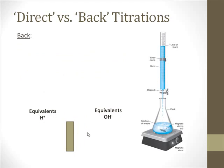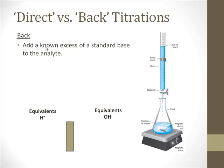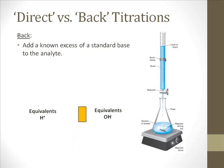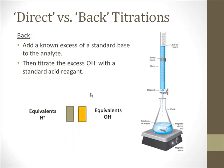In a back titration, the first thing we do is add a known excess of a standard base to the analyte. Because the analyte is an acid, we add base to it. The hydrogen ions and hydroxide ions react and consume each other, and we're left with a certain amount of excess hydroxide ion. Then we titrate whatever hydroxide ion is left over with a standard acid reagent.